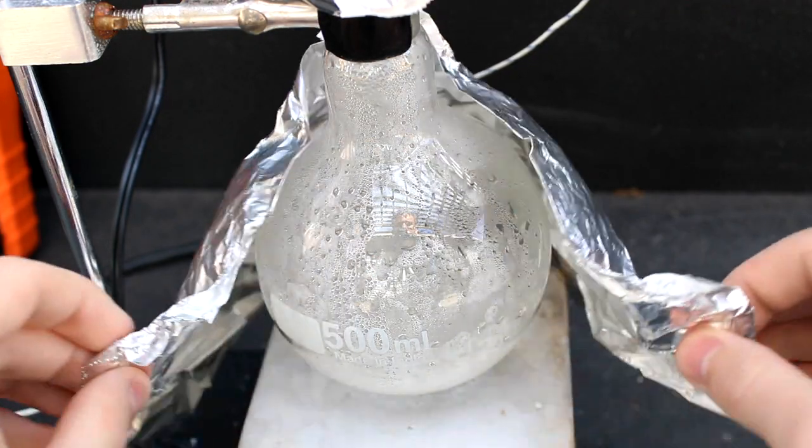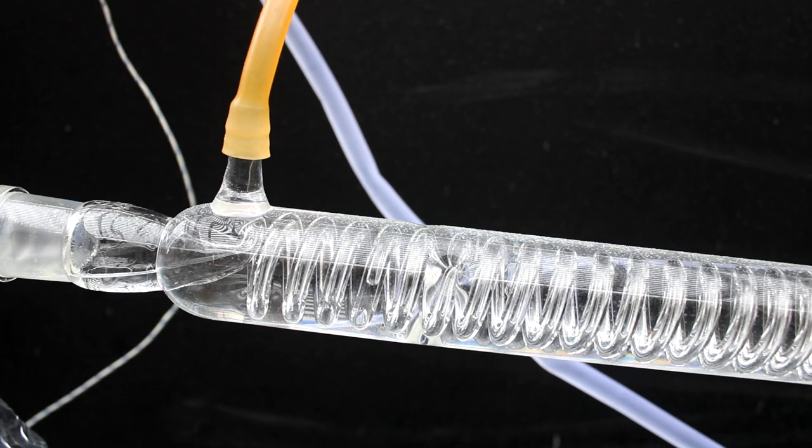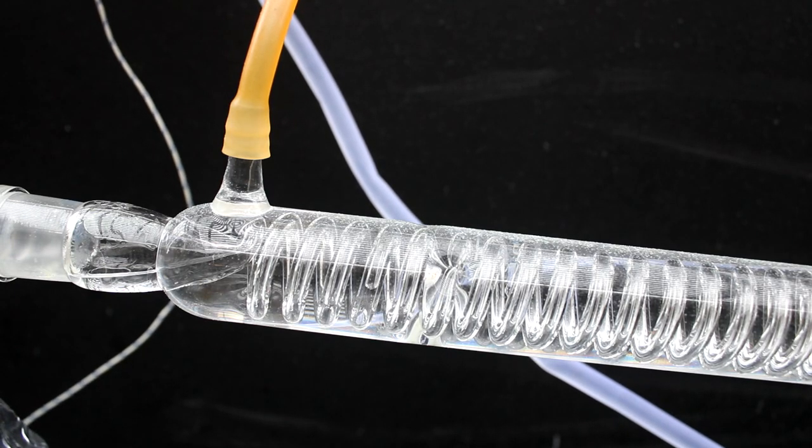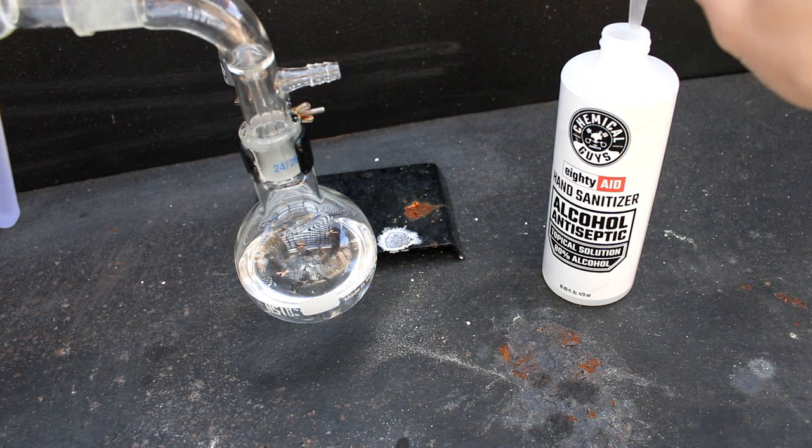After a few hours, the ethanol should all come over and the temperature will rise above 90 degrees celsius. At this point, the liquid in the boiling flask has lost most of its ethanol and the distillation has stopped. In our receiving flask, we are left with a clear solution containing over 90% ethanol.